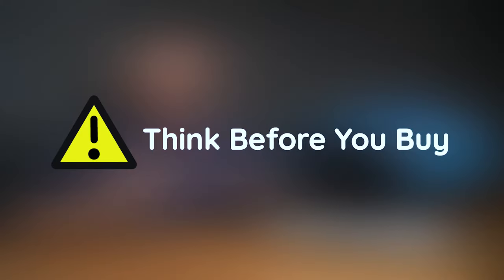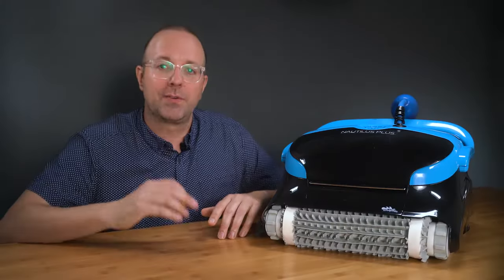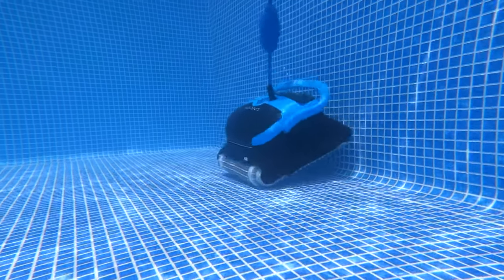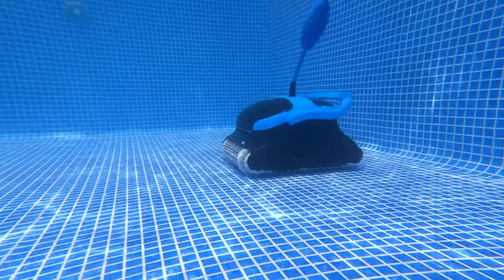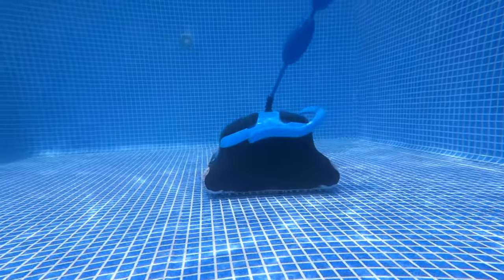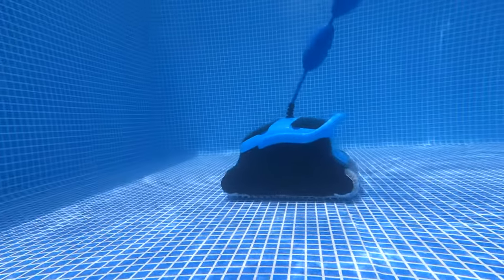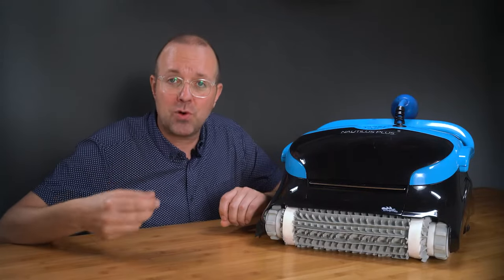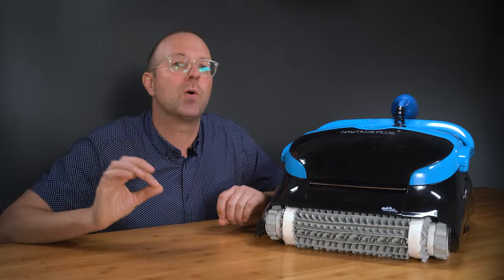Okay, so what's my final pool nerd verdict on the Nautilus CC Plus from Maytronics? Think before you buy. If cleaning the waterline and tile line is important to you, then pass on this robot. If picking up large amounts of leaves is important to you, then it's a no-go. It's popular for a reason. It's dependable, it's great on pool floors, but it doesn't deliver performance like the premium units that cost marginally more.